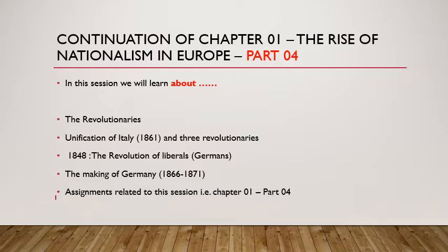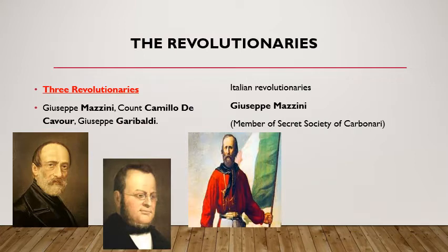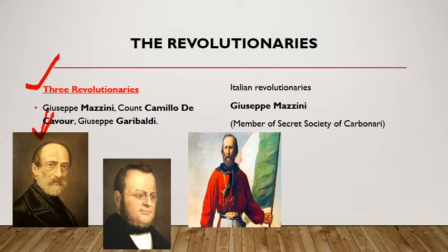Finally, we are going to look into the assignments related to this session. The three revolutionaries — Joseph Mazzini, Count Camillo de Cavour, and Joseph Garibaldi — played a very important role in the Italian unification. Joseph Mazzini led to the formation of two secret societies: Young Italy, in Marseille, and Young Europe, in Berlin.